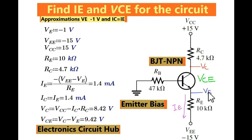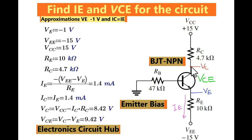This is the voltage drop across the resistance RE. At this point, your voltage across the emitter resistance is VE. And at this collector node, the voltage is given by VC. In other words, the voltage at the collector node is VC and the voltage at the emitter node is given by VE. VCE represents the voltage between collector and emitter of your NPN transistor.